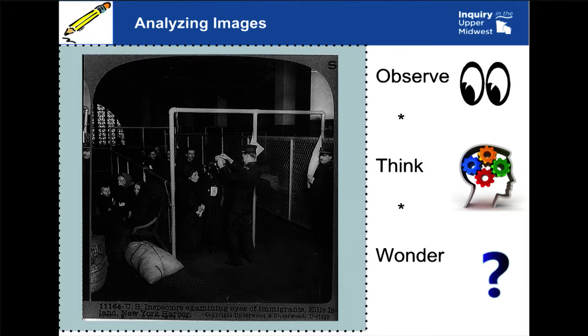So take a look at this image. What do you observe? What do you think? What do you wonder? You might observe that there's a lot of people, that there's a person in uniform, that there are people sitting off to the side. You might think, are these people being examined? You might think, is that Ellis Island that I see at the very bottom in the caption? And are those people being examined coming into the country? And then you might wonder, where are these people from, and what are they being examined for? There are a whole lot of questions that can come from this after you think about what you see and what you think.